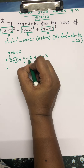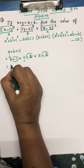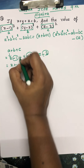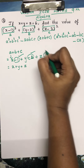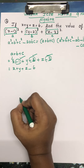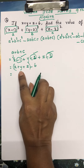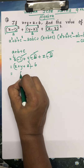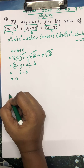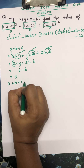Looking at the numbers: −1 − 2 − 3 gives −6, and x + y + z gives 6. Adding them together: 6 + (−6) = 0. Since x + y + z = 6 is given, we get a + b + c = 6 − 6 = 0.